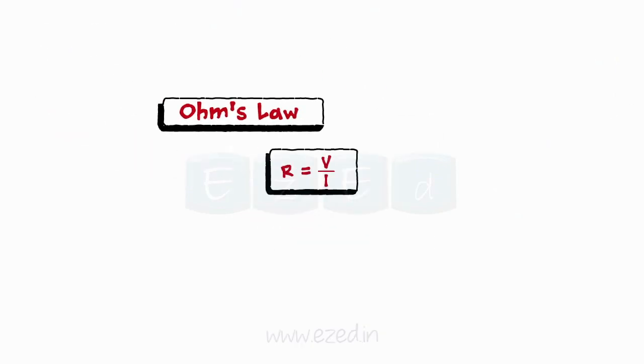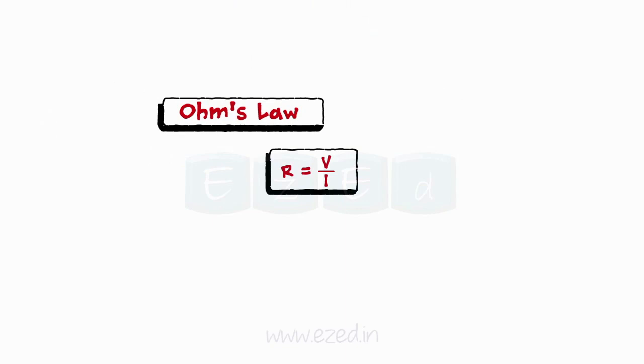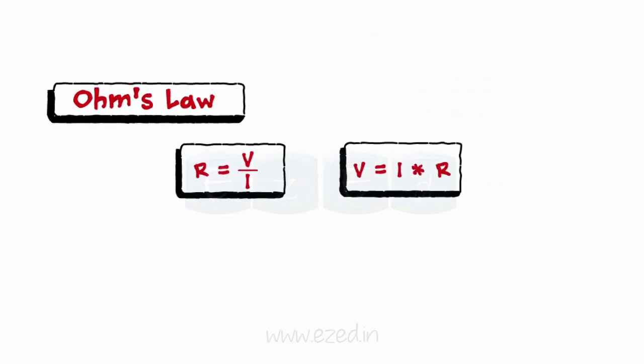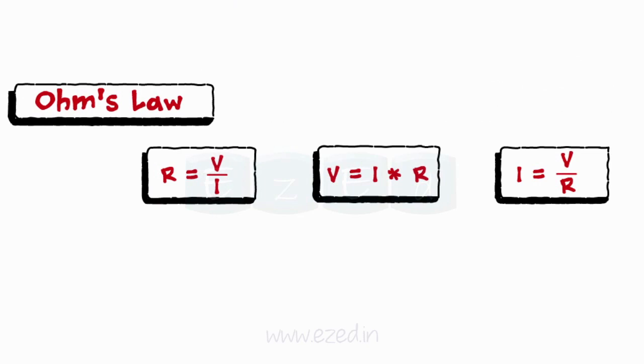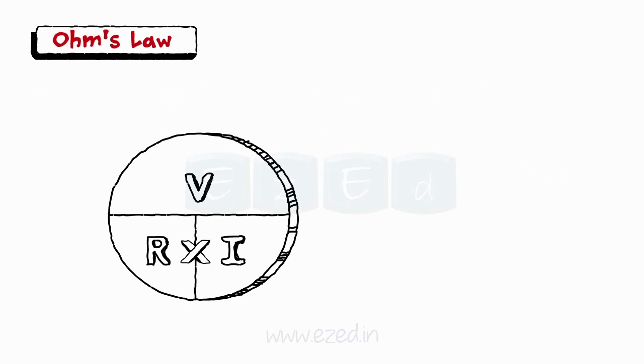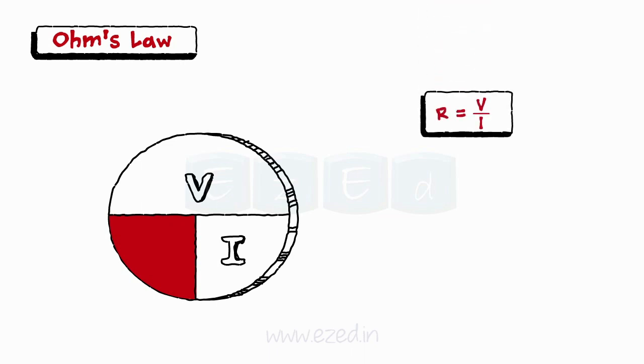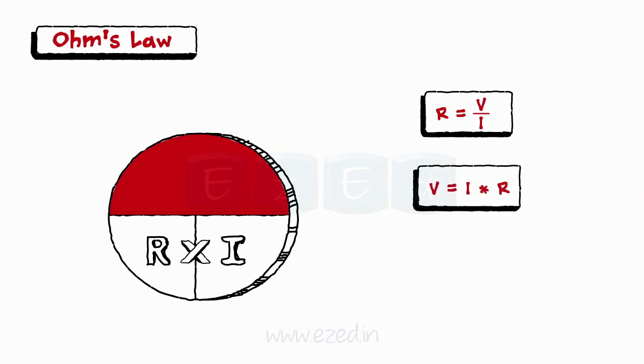Ohm's law can be represented in three different forms. Cover V and you get the formula V equals I into R and the same goes with I.